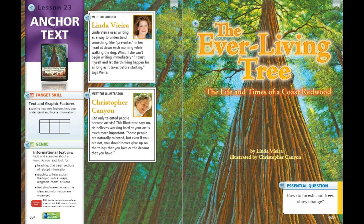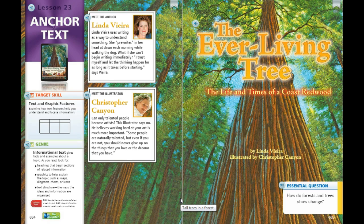If you turn the page, we will find our author and our illustrator. You can read more about them on your own. We already have seen this text and graphic feature graphic organizer, so we're going to use these to help us understand the text features and to locate information. The Ever-Living Tree is an informational text and it gives us facts and examples about a topic. This selection has maps and diagrams, and there are realistic drawings that show scenes of nature and people from long ago. Because of the drawings, the diagrams, and the title, I can tell that this is a non-fiction informational text about coast redwood trees.